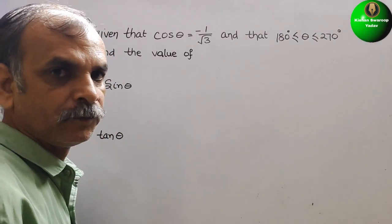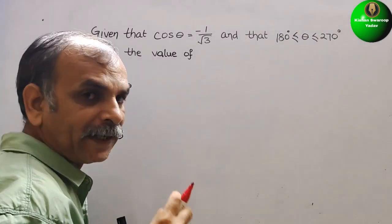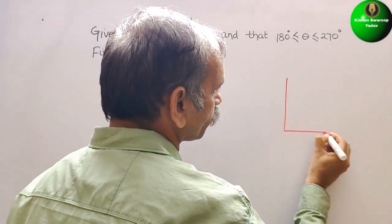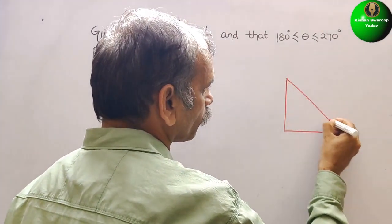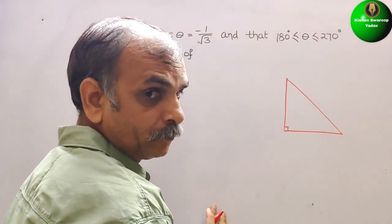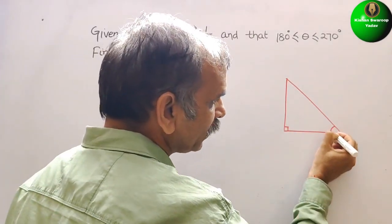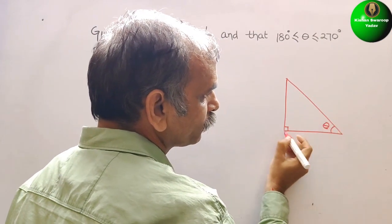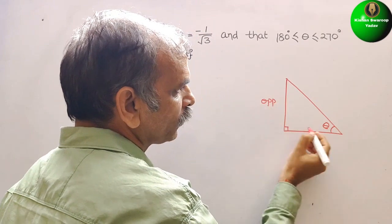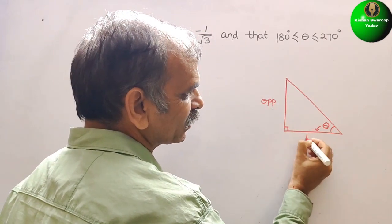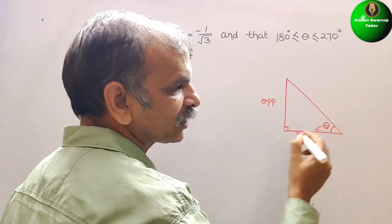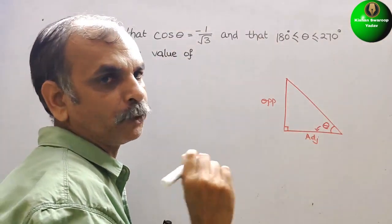So understand this. Suppose this is your right angle triangle and this is 90 degrees. Suppose here it is your theta. So this side is your opposite side, this is your adjacent, and this is your slant side, that is your hypotenuse.